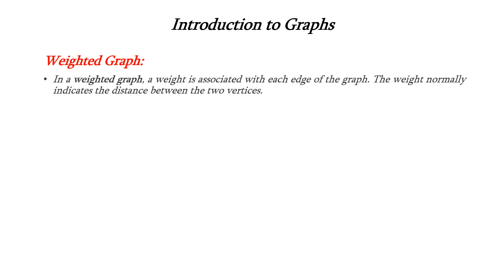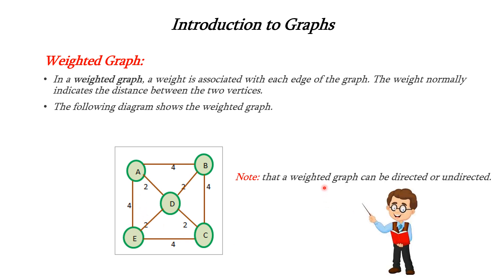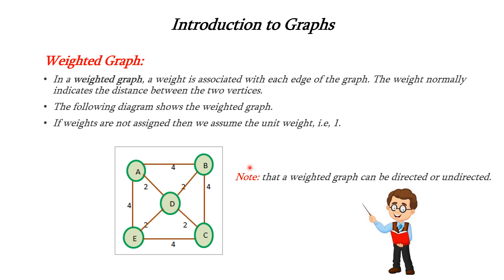Next is a weighted graph. In a weighted graph, a weight is associated with each edge of the graph — it normally indicates the distance between the two vertices. This diagram shows the weighted graph; it is similar to the normal graph except that we can see a number associated with each pair of links. This number is called as weight. A weighted graph can be either a directed graph or undirected graph, and if no weights are assigned, then we assume unit weight — that is, 1 is assigned to the links.